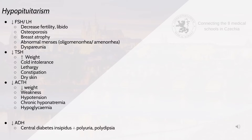A decrease in FSH or LH leads to decreased fertility and libido, osteoporosis, breast atrophy, abnormal menses and dyspareunia — which is pain during sexual intercourse. A decrease in TSH leads to increased weight, cold intolerance, constipation, fatigue and dry skin.